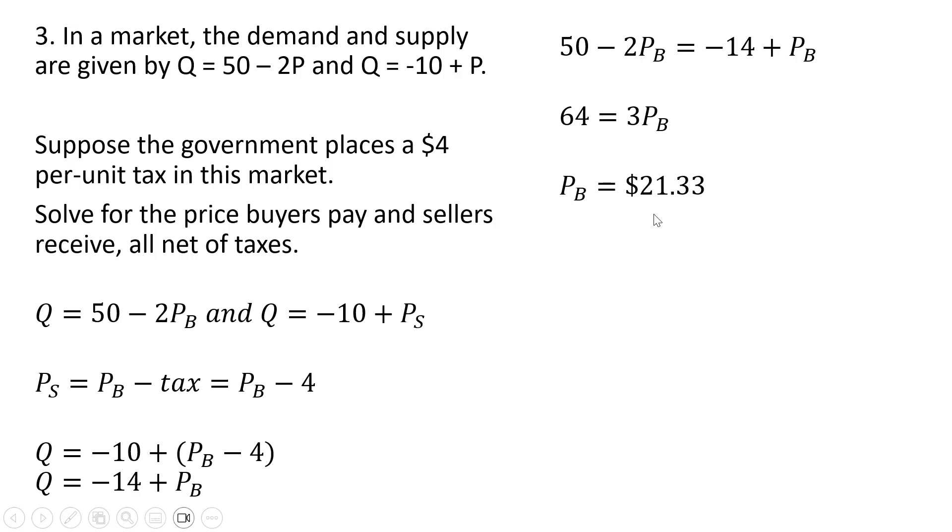This is a little bit more than what buyers were paying without the tax. Without the tax, we saw in question one, buyers were only paying $20. As for sellers, sellers receive this $21.33 from buyers, but then submit the tax to the government, leaving sellers net of $17.33.